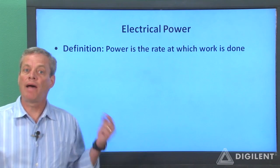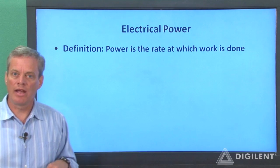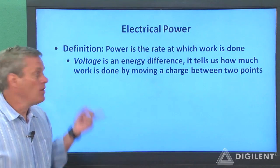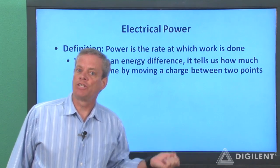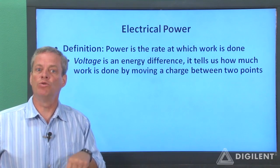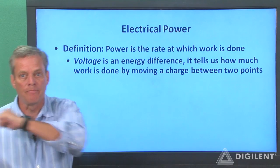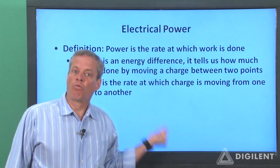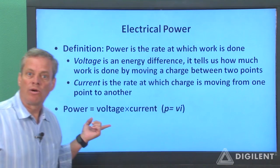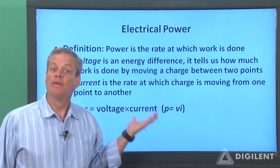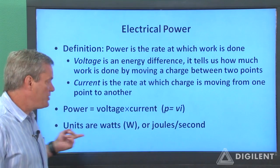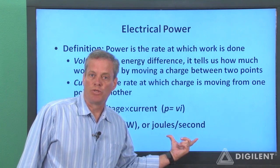Regardless of what type of system we're talking about, power is defined as the rate of energy transfer, or equivalently, the rate at which work is being done. For electrical systems, voltage is an energy difference that a charge has at two different points. Another way to look at this is that voltage is the work done in moving a charge from one point in a circuit to another. Current is the rate at which charge is moving between two points. Therefore, electrical power is the product of voltage times current. This is the rate at which work is being done by moving charges from one voltage level to another. Units of power are watts, which is exactly the same as joules per second.